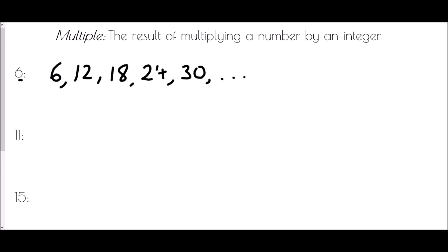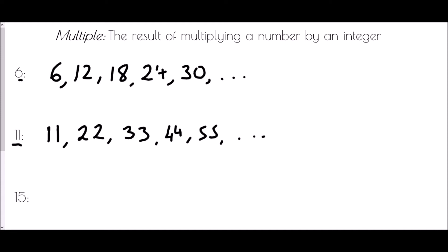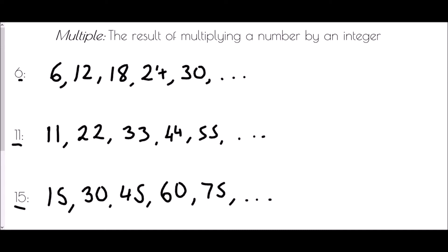Multiples of 11: the first multiple is 11 times 1 = 11, then 22, 33, 44, 55 — and it could go on and on. Multiples of 15: the first multiple is 15. If you don't know your 15 times table, just add 15 each time: 15, 30, 45, 60, 75 — and that would continue on and on.